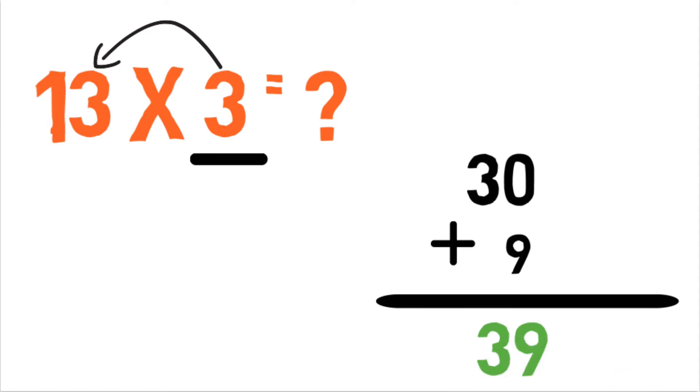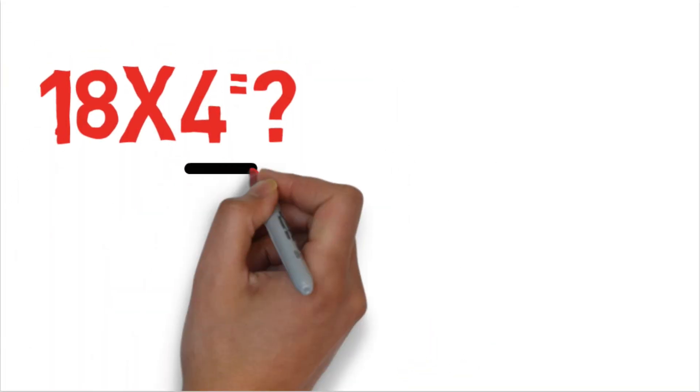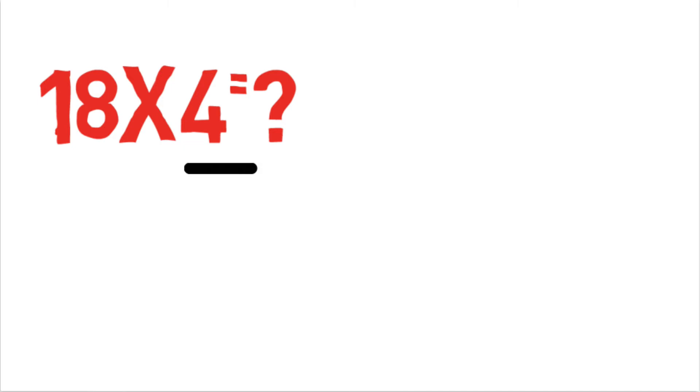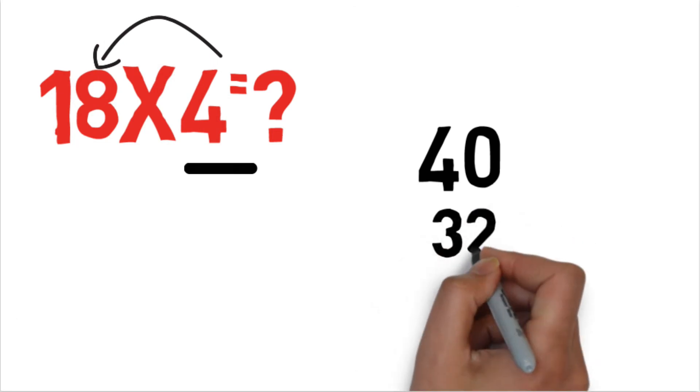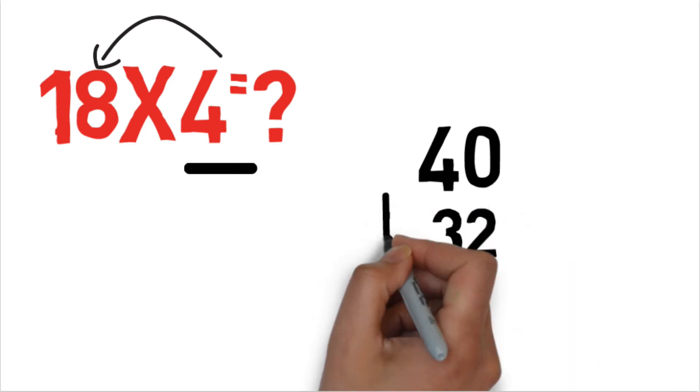Now let's take another example: 18×4. So if I talk about here, we have unit digit as 4, so I'll add zero to it and it will become 40. So 8×4 is 32.